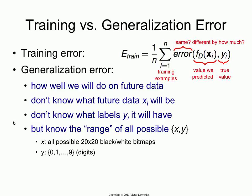So generalization error — this is how well we're going to do in the future on the data that will come tomorrow. Now, of course, we don't know what the data will be, so we don't have the XIs. We don't know what data will come tomorrow, and we don't have the labels for them. So we can't actually write an expression for the generalization error. But if we're classifying bitmaps into digits, we know that data coming tomorrow will be 20 by 20 black and white bitmaps.